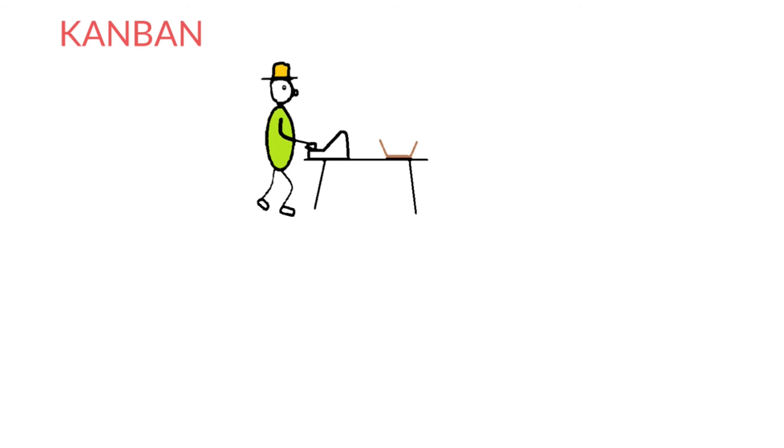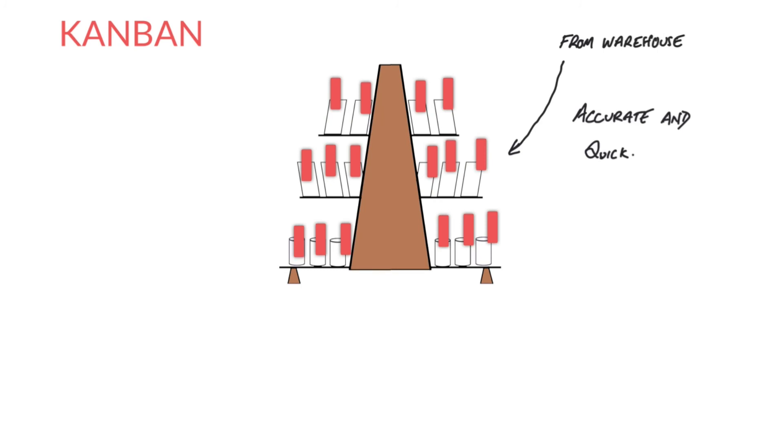If the card system were not used, it would be difficult to determine what was required in the shelving area. Staff would have to be employed to check and make lists. The data would always have inaccuracies because product is constantly being taken off the shelf. Manufacturing Kanbans are used in exactly the same way.